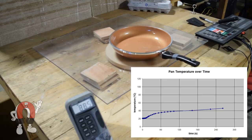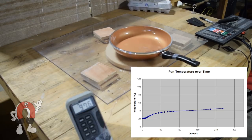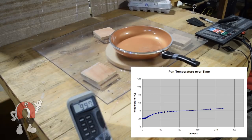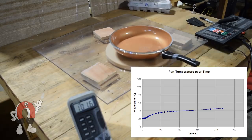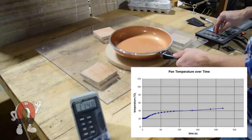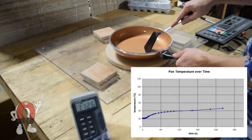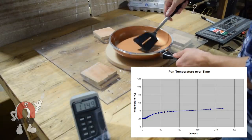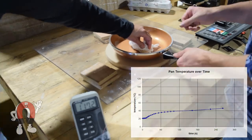In our first test, the pan rose in temperature pretty quickly but it soon hit a plateau. The pan only got to be around 120 degrees Fahrenheit. This is because the pan was too large and too thin, but we still wanted to try cooking an egg.